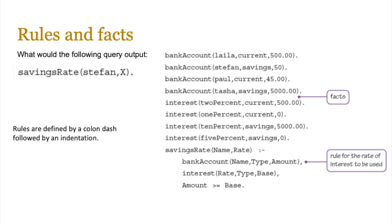So we're going to match 'savings' and bring back the rate and the base. There are two items: interest 10% savings 5000, and interest 5% savings 0. Now we compare the amount in bank_account — which is 50 — asking: is 50 greater than or equal to the base? The first base for 10% is 5000, so 50 is not greater than or equal to 5000, it doesn't match. But for the second one, 5% savings 0 — 50 is greater than 0, therefore the 5% rate will apply, so we return rate 5% back to the user.